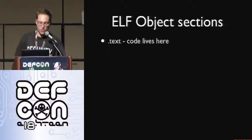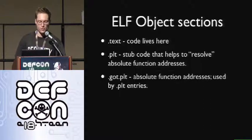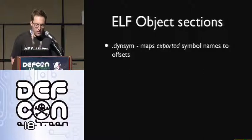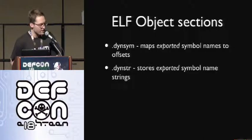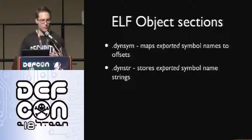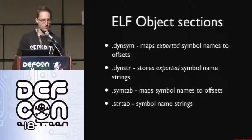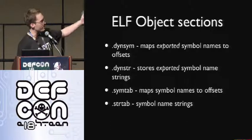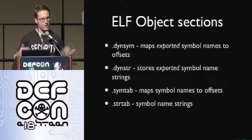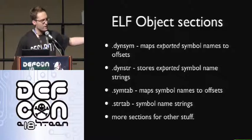Some important ELF sections: the text section is where code lives; the PLT section has stub code that helps resolve absolute function addresses; the GOT PLT is where absolute function addresses are stored and used by PLT entries. There are also debugging sections like debug_info and GNU debuglink. The dynsym and dynstr sections are used for dynamic linking — dynsym creates a mapping between exported symbol names and offsets, and dynstr stores the actual symbol names. The symtab and strtab are supersets of that information, including local variables and other non-exported symbols, which is useful for debugging. There are also sections for stack unwinding and exception handling.